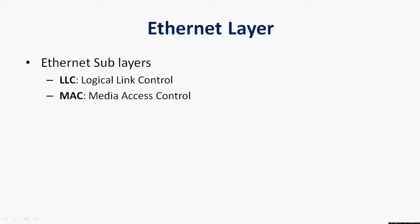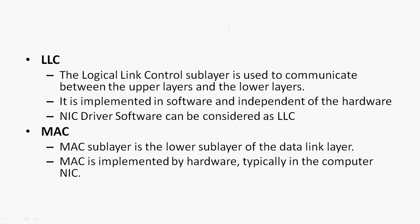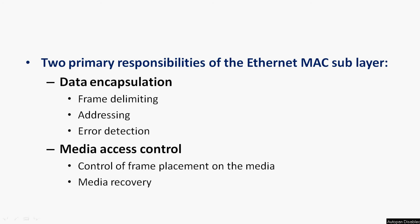The Ethernet layer has two sub-layers: LLC (Logical Link Control) and MAC (Media Access Control). The LLC sub-layer is used to communicate between the upper layers and the lower layers; it is implemented in software and independent of the hardware. The NIC driver software can be considered as LLC. The MAC sub-layer is the lower sub-layer of the data link layer and is implemented by hardware, typically in the computer NIC.